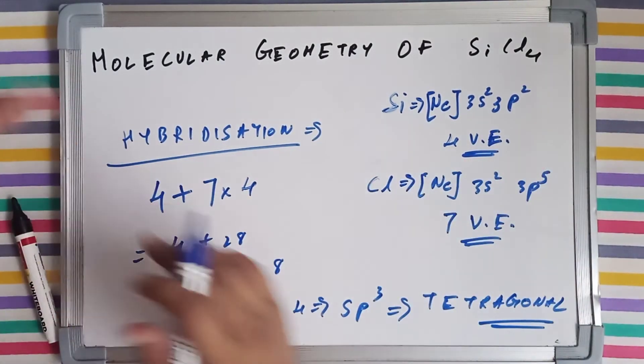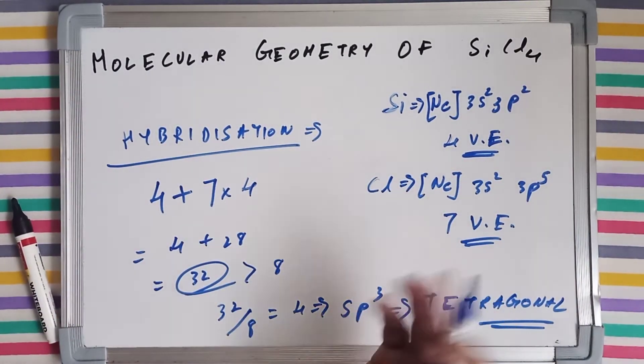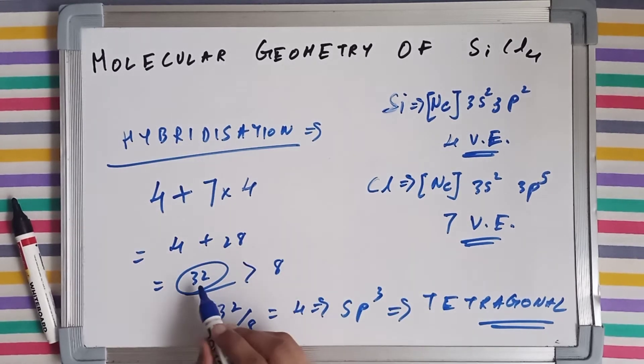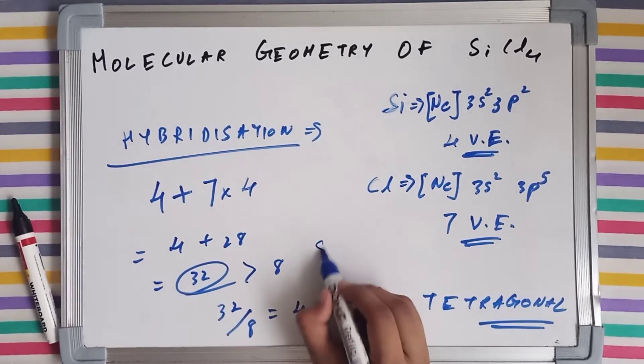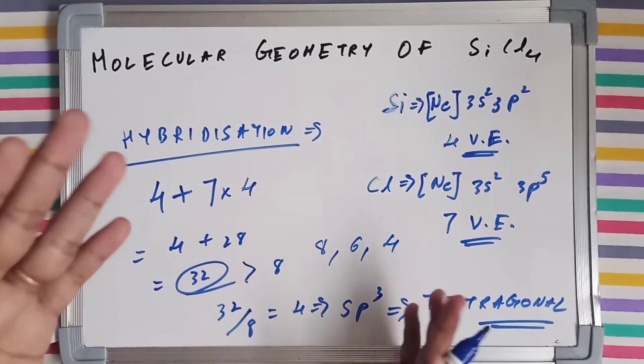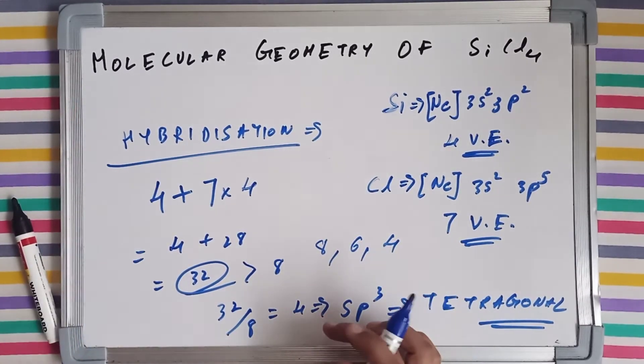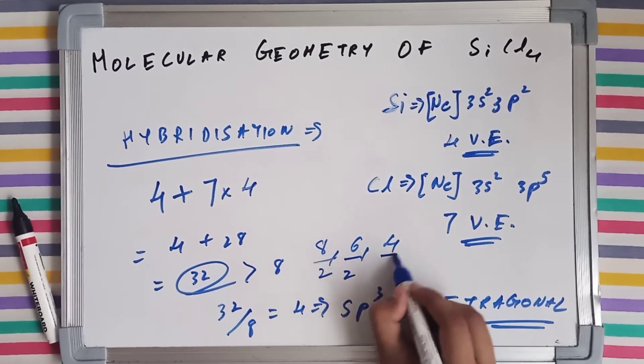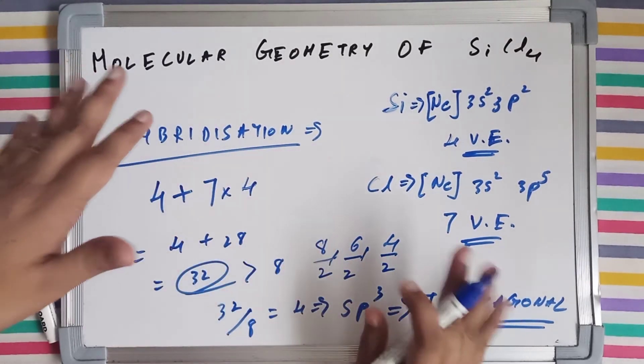But let's go back a little. See, if this number would have been 8 or maybe 6 or maybe 4, lesser than 8 or maybe equal to 8, then we would have divided it by 2. This is the rule for calculating hybridization.